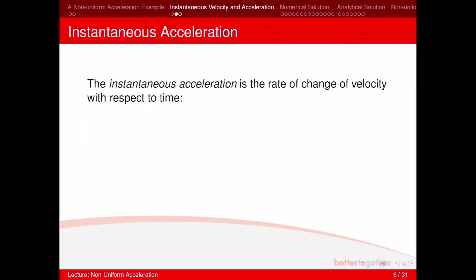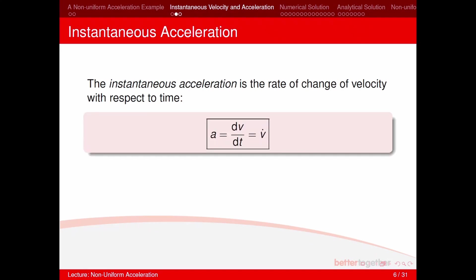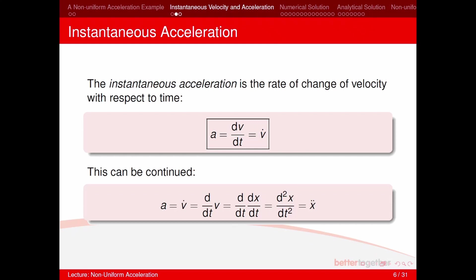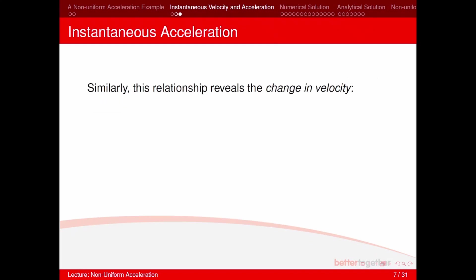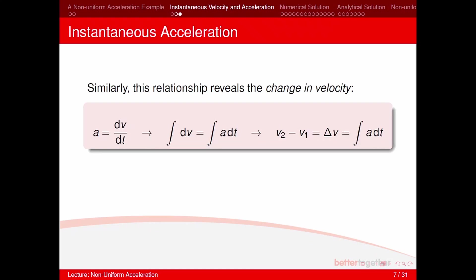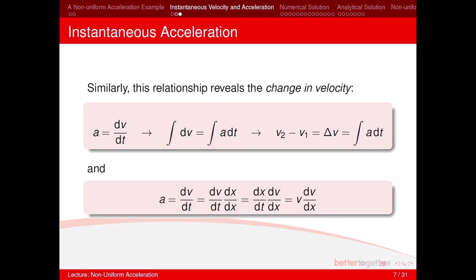The instantaneous acceleration is the rate of change of velocity with respect to time, written as a = dv/dt, or v-dot. This can also be written as x-double-dot. Similarly, we can multiply both sides by dt and integrate to get the change in velocity: Δv = ∫a dt. We can also rearrange to get acceleration equal to velocity times the derivative of velocity with respect to displacement.